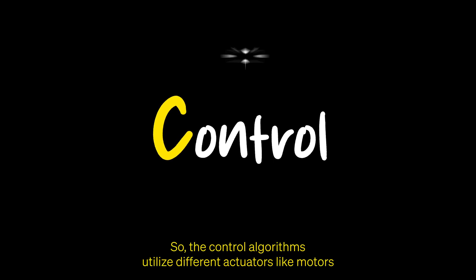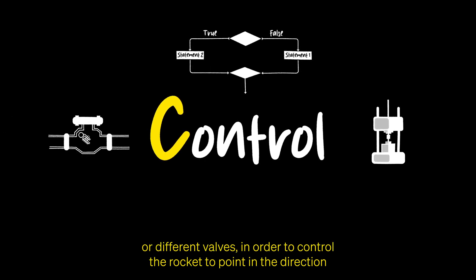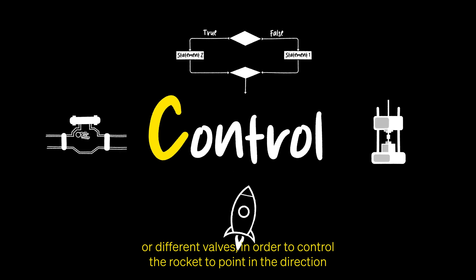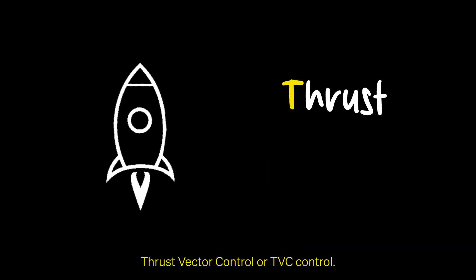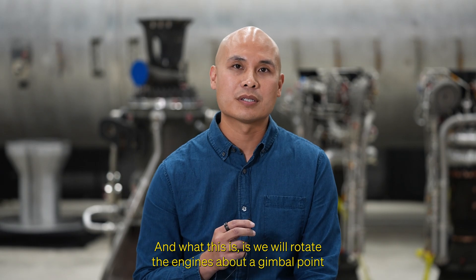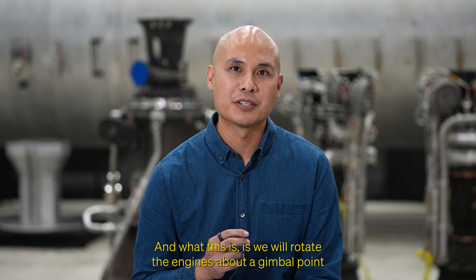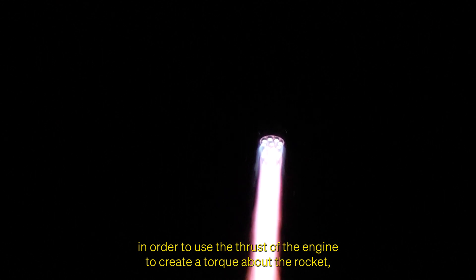The control algorithms utilize different actuators, like motors or different valves, in order to control the rocket to point in the direction that's determined by the guidance algorithms. When the engines are firing, we use something called thrust vector control, or TVC. What this is: we rotate the engines about a gimbal point in order to use the thrust of the engine to create a torque about the rocket, and we can use this to steer it in the direction that we want it to go.